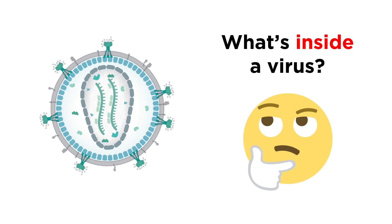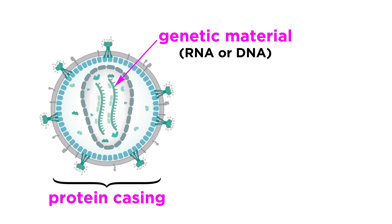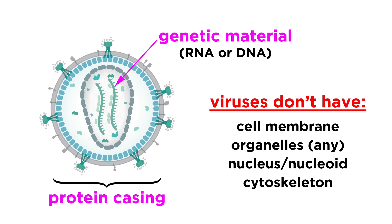So what's inside a virus exactly? In truth, a virus is pretty much just genetic material in a protein casing. There is no membrane, no organelles — not much of anything we are used to seeing in living creatures.